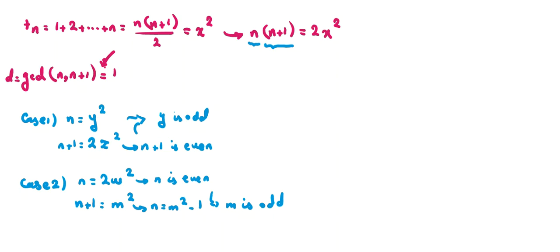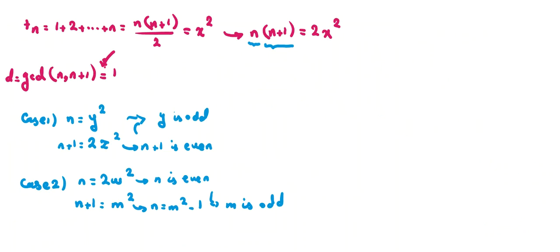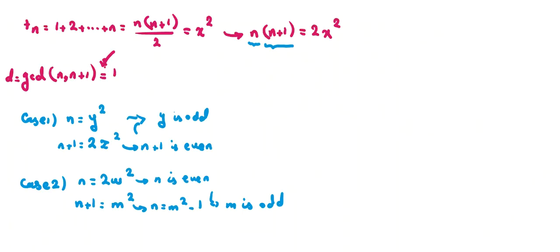We know the third triangular perfect square corresponds to n = 49 = 7². So we should start checking after 7. We check 7² = 49 and 7² − 1 = 48, but the third solution is already T_49, so we start from 9. The candidates for n are 9² = 81 and 9² − 1 = 80.